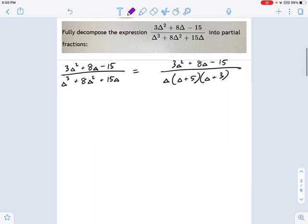So at first this looks harder, but we're going to do the exact same technique. I'm going to separate this into partial fractions. We're going to have A over delta plus B over delta plus 5 plus C over delta plus 3. They're all constant values, the A, B, and C, because, again, these are all linear factors.